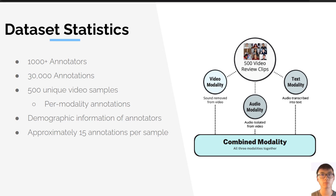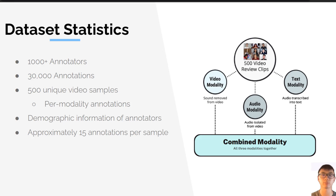Using the crowdsourcing platform Prolific, we gathered a wide variety of crowd workers to annotate our data. We had over 1,000 annotators and over 30,000 annotations. Annotators were given 30 randomly selected video samples from a random modality type from 500 unique video samples, and they were asked to rate the sentiment of the speaker in the video. We also collected the demographic information of the annotators. In total, we received about 15 annotations per video sample.